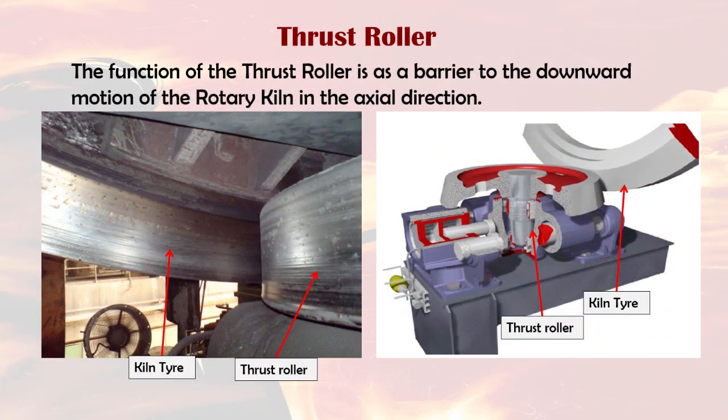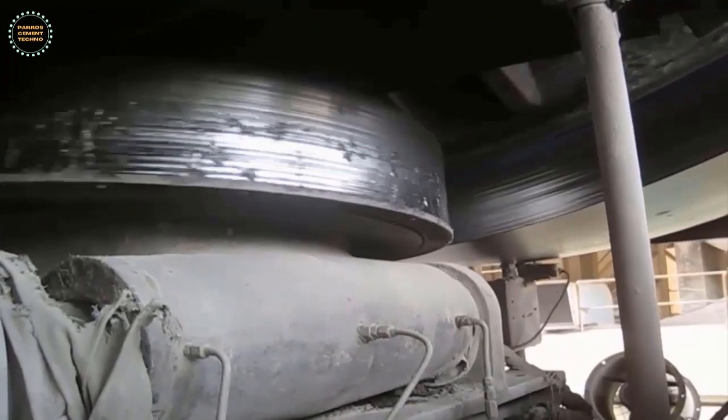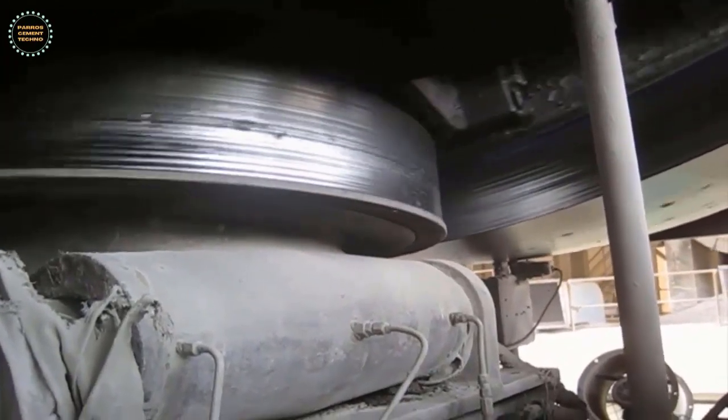4. Thrust roller. The thrust roller is an important auxiliary part of the rotary kiln. It is designed to control the axial movement of the rotary kiln, so that the tires and supporting rollers can be evenly distributed over their full width. The thrust roller is controlled using a hydraulic pump with a pressure of 50 to 100 bar.